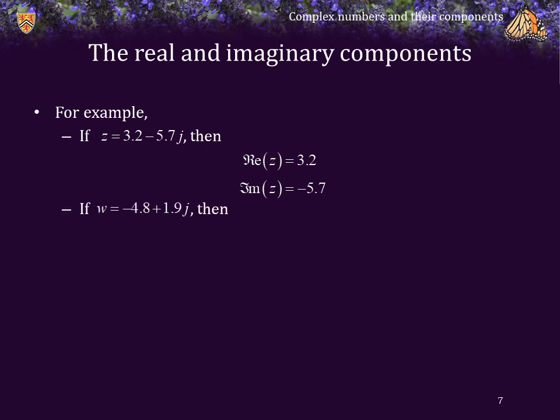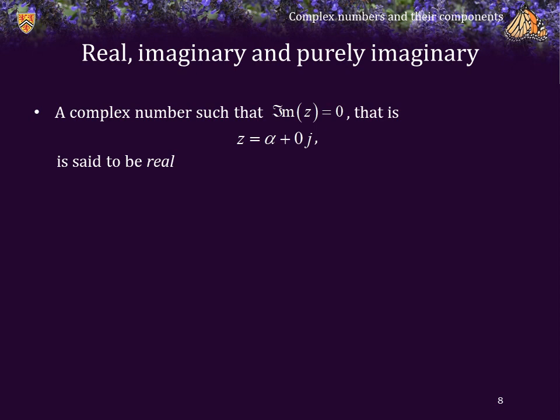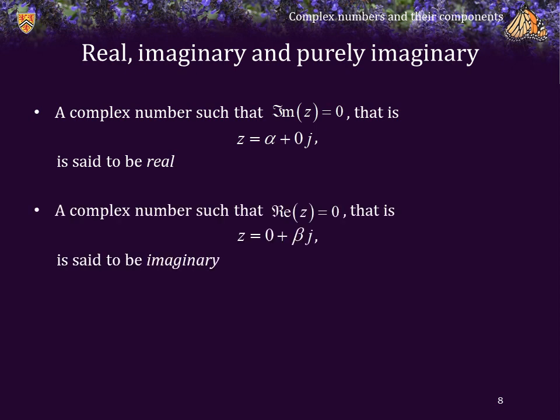Similarly, if w equals negative 4.8 plus 1.9j, the real part of w is negative 4.8 and the imaginary part of w is 1.9. A complex number that has an imaginary component equal to 0 — that is, z equals alpha plus 0j — we say that complex number is "real." Similarly, a complex number with a real component equal to 0 — z of the form 0 plus beta j — we say is "imaginary." Notice that 0 is both real and imaginary.